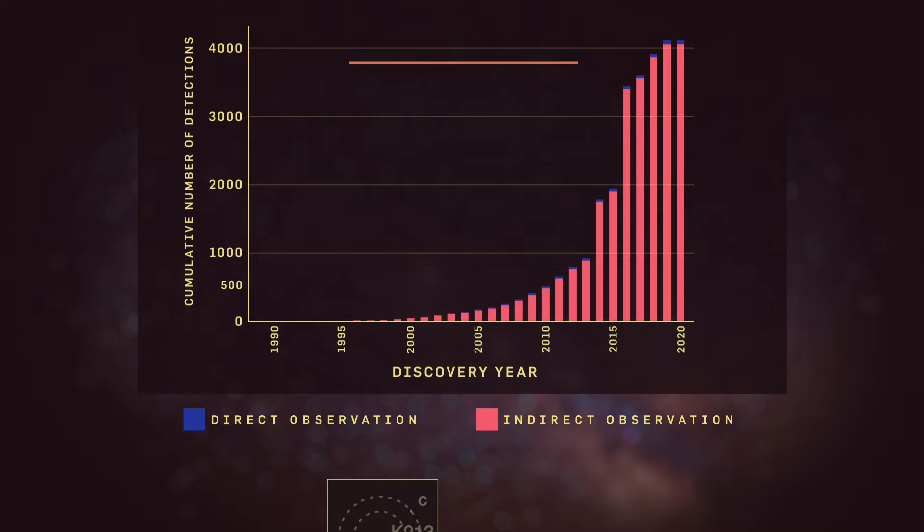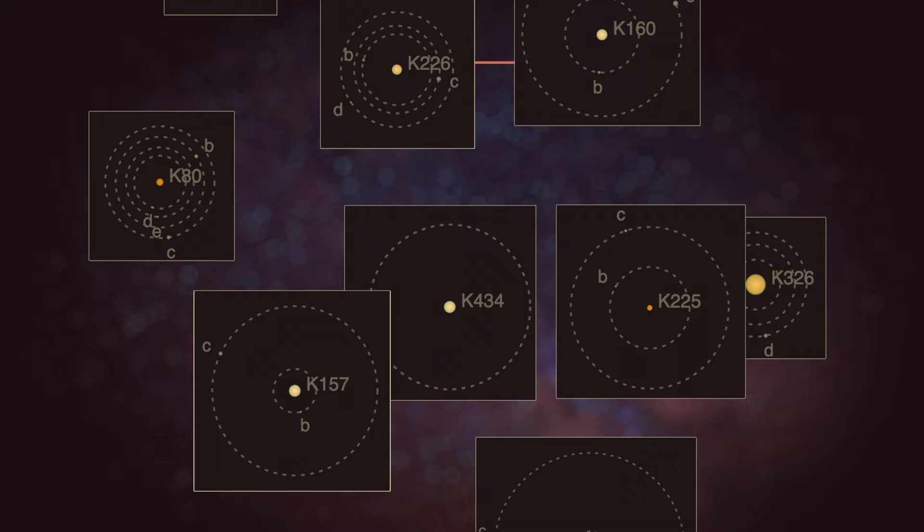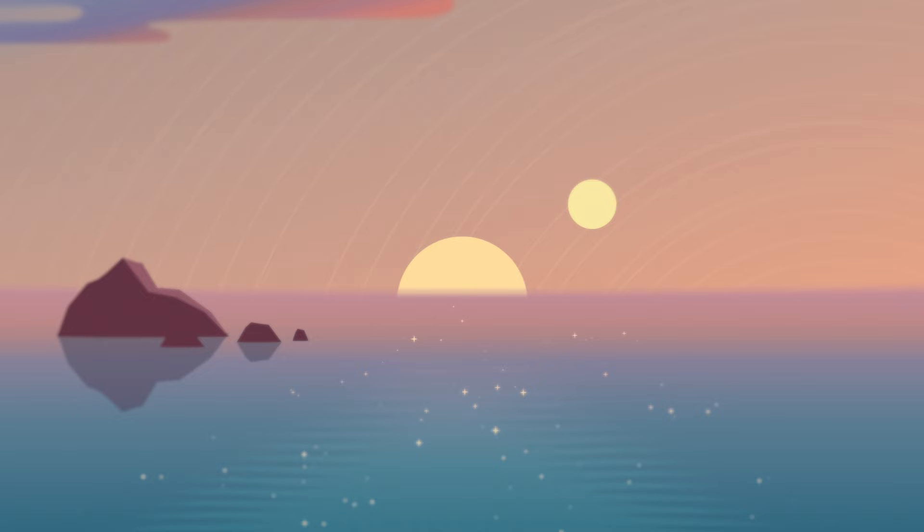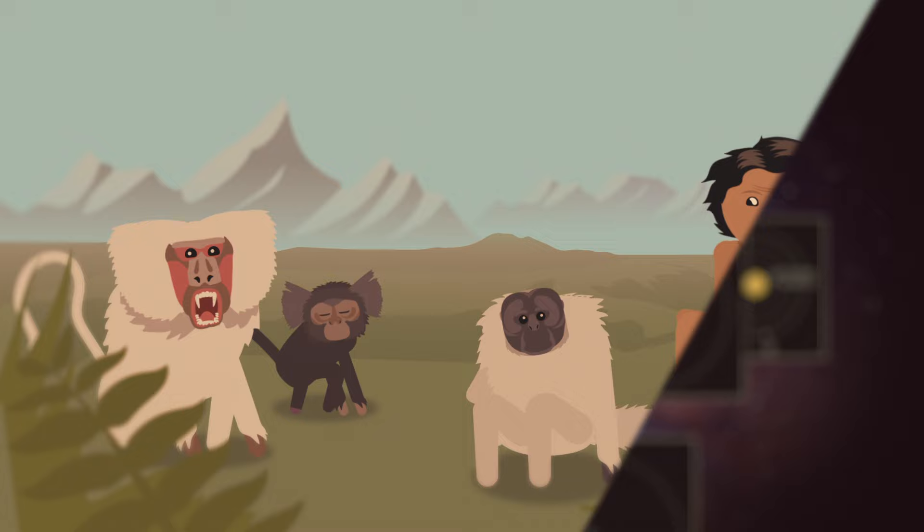So now that we have a whole zoo of exoplanet systems, that allows us to ask the big questions. Is the solar system typical? Can we expect that what we see in our own solar system, life, everything else, is that something that's going to be common across the galaxy? Or is there something very special about our solar system that makes it possible for us to exist? Those are the big picture questions driving the field.